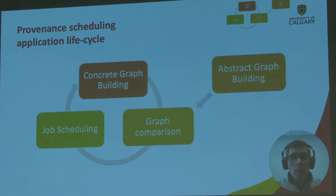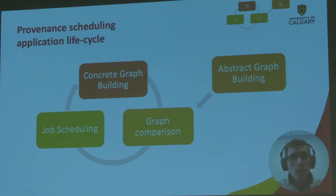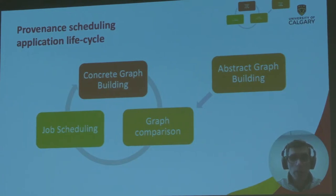This is a high-level diagram of our provenance-based application lifecycle. On the left side we have the iterative steps. From the top, in a clockwise direction, we have the concrete graph building stage, the graph comparison stage, and the job scheduling stage. The abstract graph building component, shown on the right, could be made into an auxiliary or standalone application; however, in this case it is included in the main package. In this iterative approach, the abstract and concrete graphs are compared, and from the difference graph we extract the tasks to be scheduled for execution. Once these tasks are completed, new provenance can be derived using DataLad, which we can then transform into a new concrete graph and repeat the entire process.